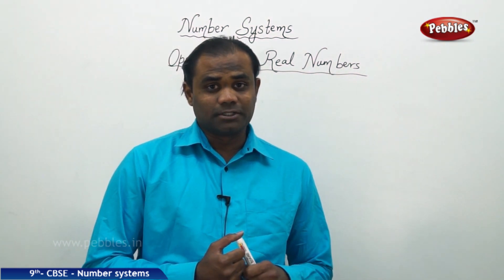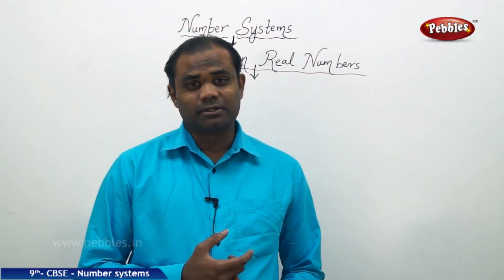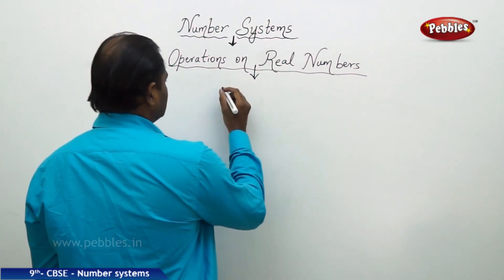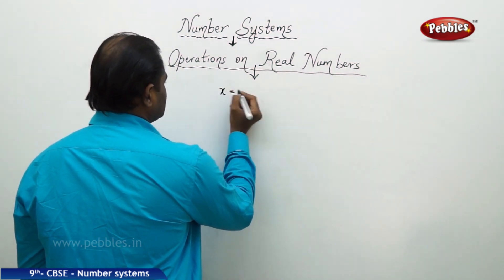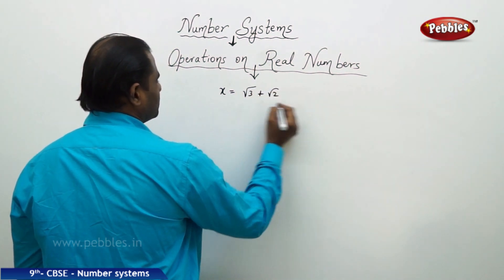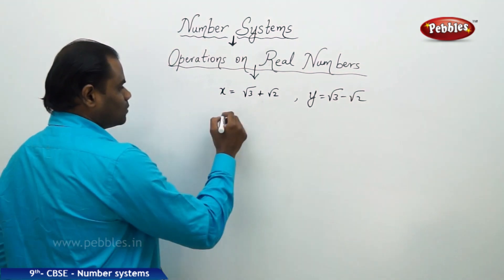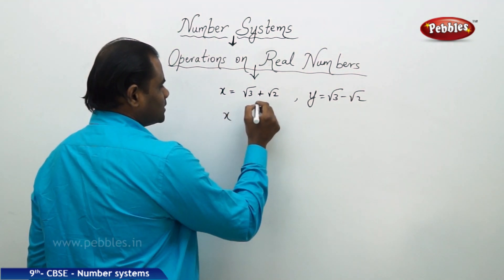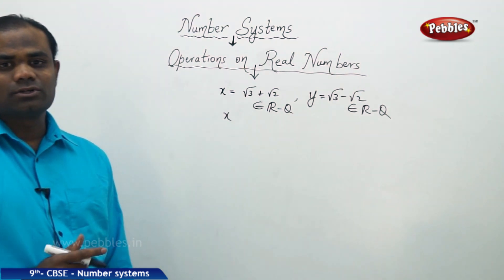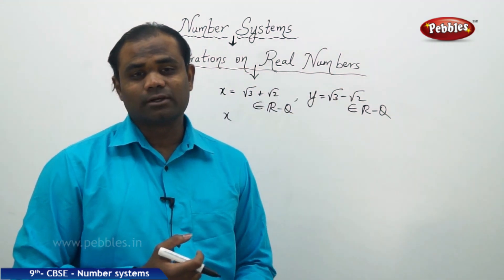Now let's see the different types of operations applicable to real numbers — mostly the rational and irrational numbers — which play a vital role in the simplification process. For example, I have two real numbers: x = √3 + √2 and y = √3 − √2. Clearly, x is an irrational number and y is also an irrational number. Let's see what the product yields through operations using real number properties.